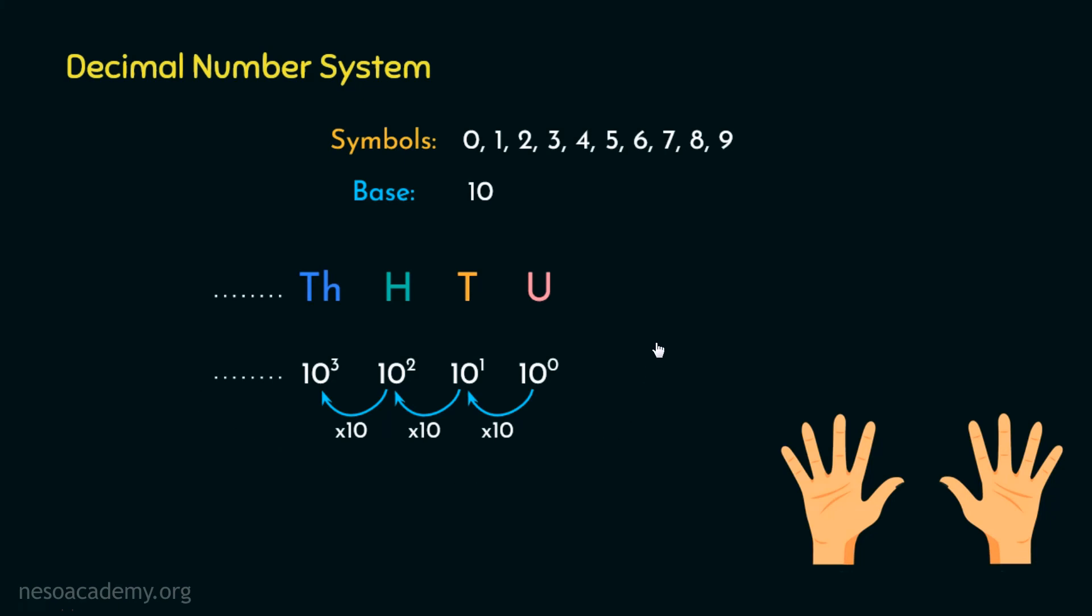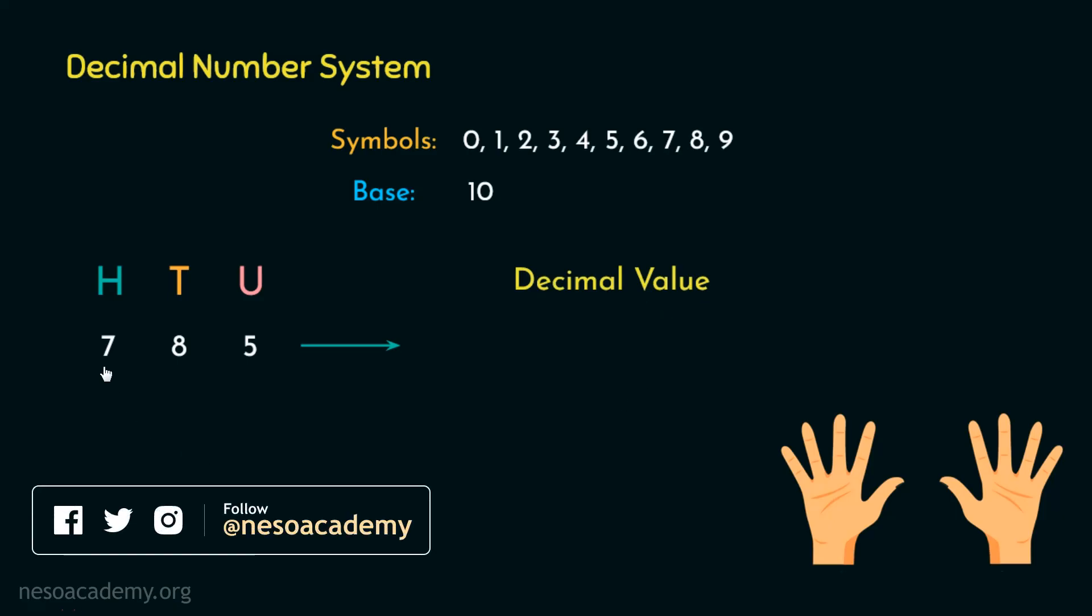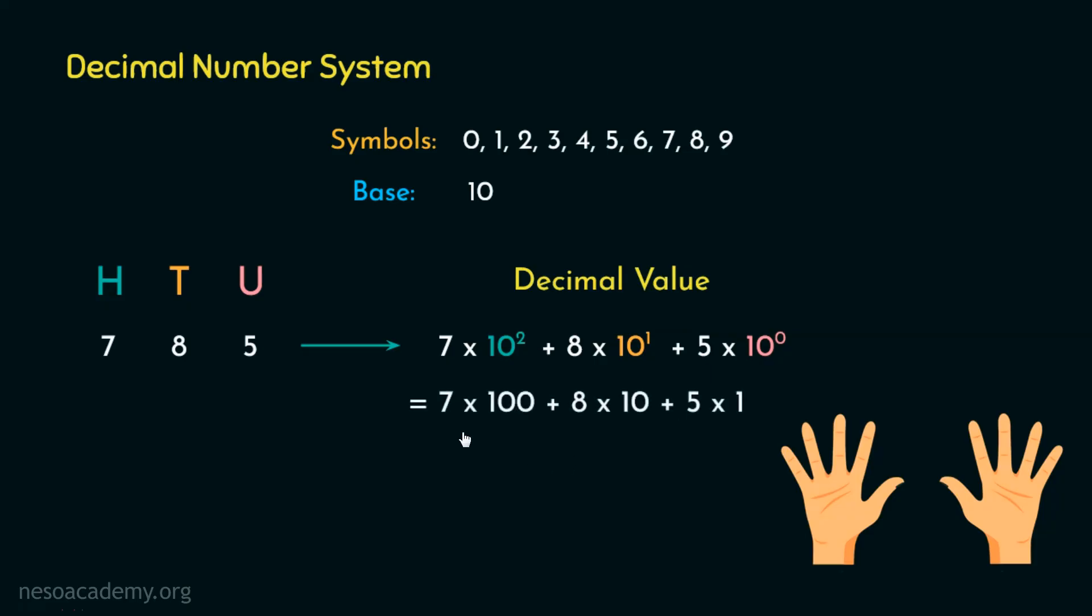Well, with the help of an example, I can also prove it to you. Consider this number 7, 8, 5, we will find out its magnitude in decimal. Now 7 is at hundreds place, so its magnitude can be obtained by multiplying its place value with itself, that is 7 into 10 squared. Now 8 is at tens place, right? So its magnitude is 8 into 10 raised to the power 1. Finally, 5 is at units place. So clearly, its magnitude can be obtained from 5 into 10 raised to the power 0, because that's what its place value is.